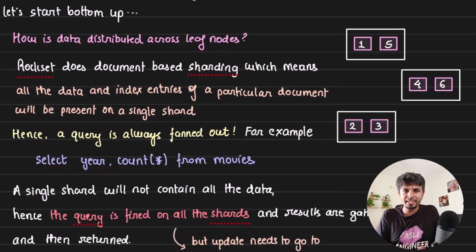I want to find out for each year how many movies came out in that year. I cannot just go to one machine and fire the query - I need to go to all the leaf nodes because my data for that corresponding year could be present anywhere.